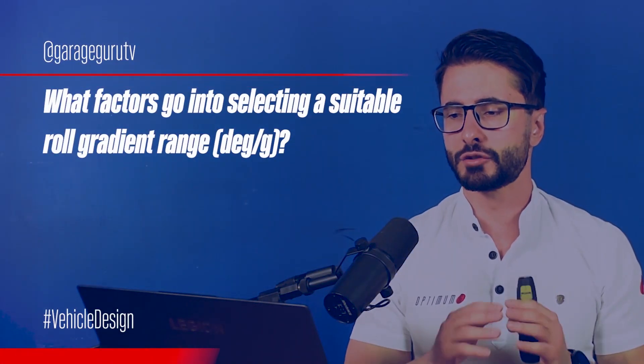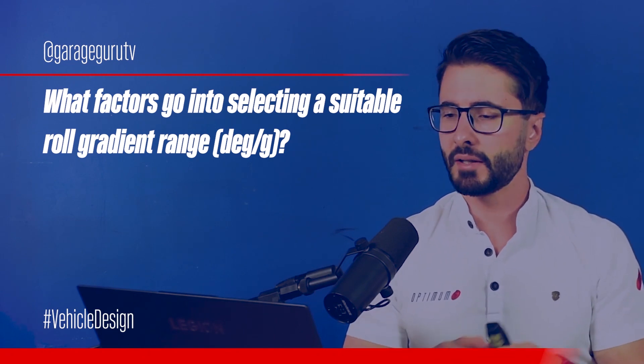Just be careful because this parameter is extremely sensitive, so every millimeter that you change will significantly influence car behavior. What factors go into selecting a suitable roll gradient range in degrees per G? Basically, the roll gradient is how much roll you get for each G of lateral acceleration. The first thing you should do to define your roll gradient is benchmarking. A given car segment — whether a passenger car, race car, GT, prototype, or formula car — will have a specific range of roll gradient that people typically use, because they've learned that it's what works best for that type of car.